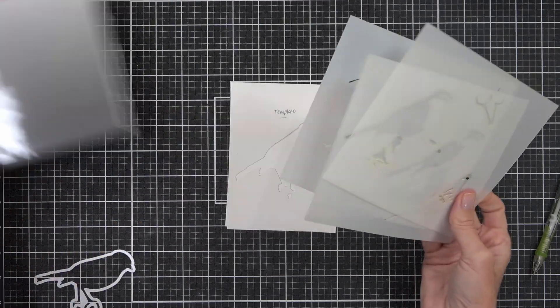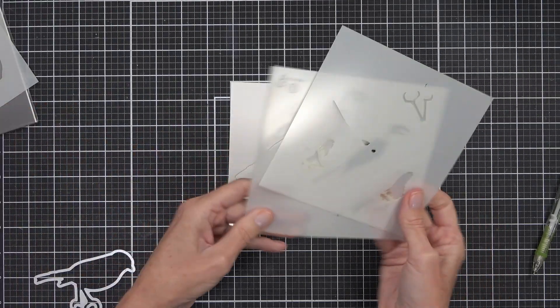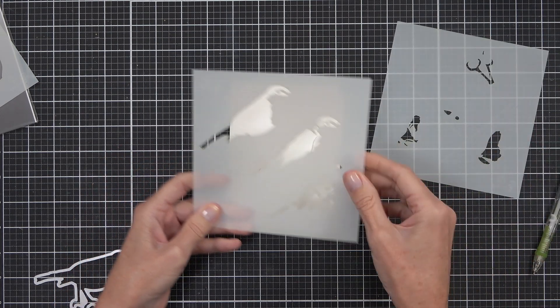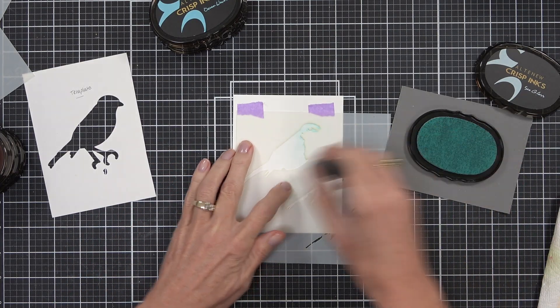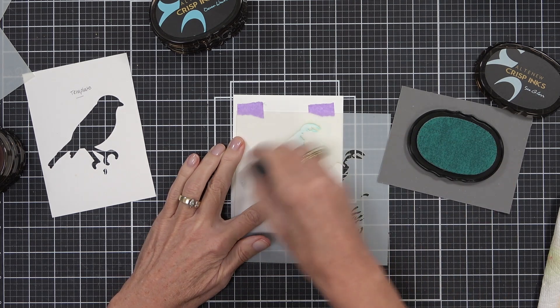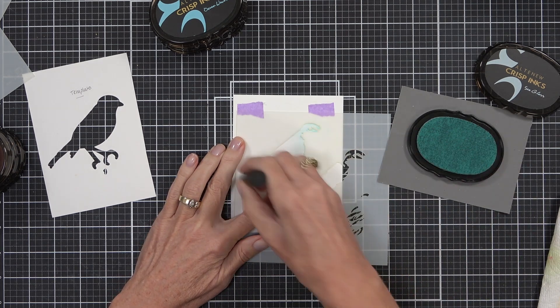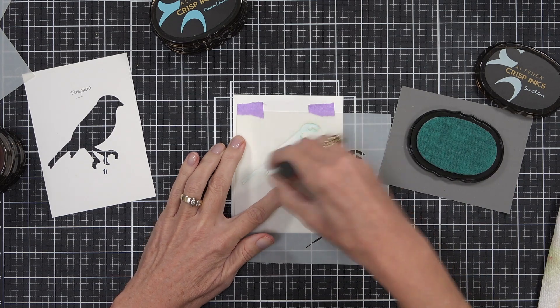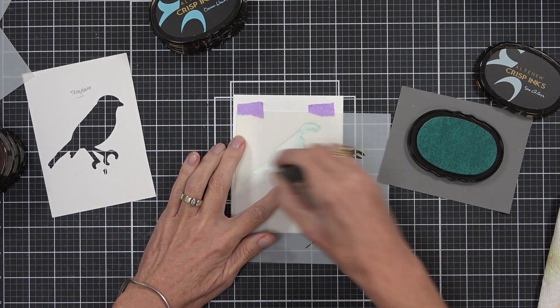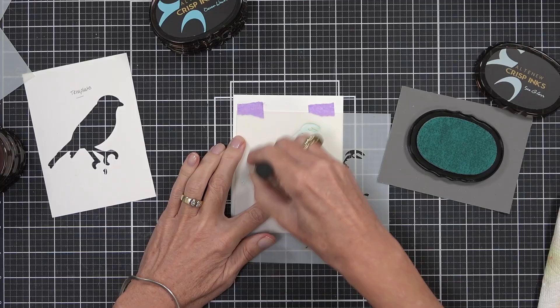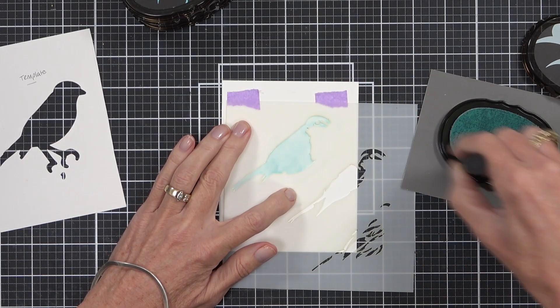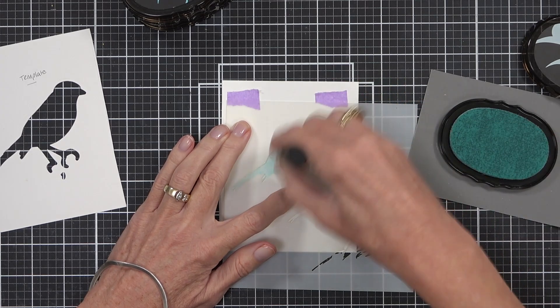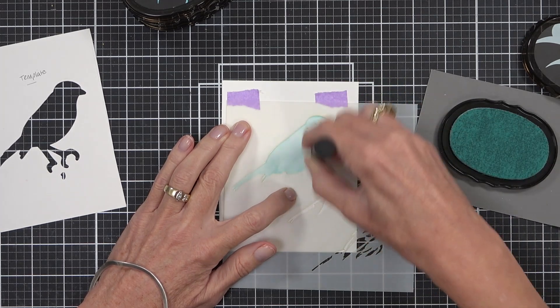And this is a stencil from the Spark Joy set and it actually stencils this beautiful bird. I think it's very similar to a bird that was released recently that was a die cut image, so if you're a stenciler or a die cutter you've got lots of options. But you can decorate this card however you please. The background is such a fun way to add a kind of modern element and you can really mix up the colors and make it your own.